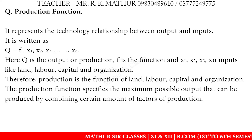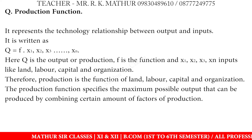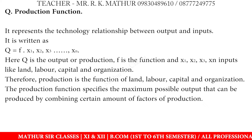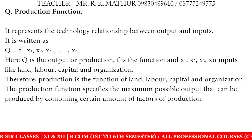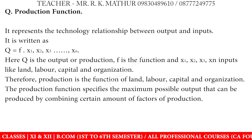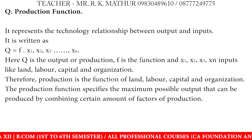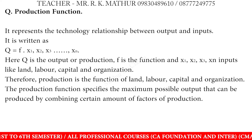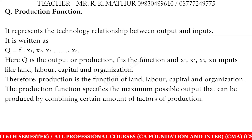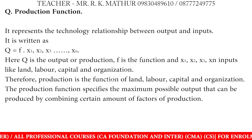It is written as q = f(x1, x2, ...). Here, q represents the output of production. F is the function, and x1, x2, x3 are the names given to the inputs — land, labor, capital, and organization.